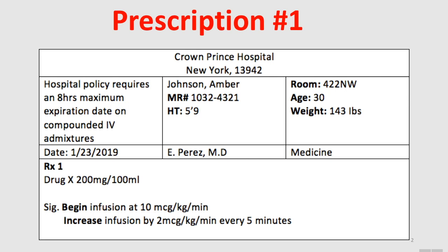In this video, I'm going to have two prescriptions, and for each prescription we're going to have the patient's information. What you need to pay attention to is the patient's weight. In the body of the prescription itself, we have 200 mg of drug X in 100 mL of normal saline, dextrose, or any other diluent. The direction is asking you to begin the infusion at 10 mcg per kg per minute, and increase the infusion by 2 mcg per kg per minute every 5 minutes.